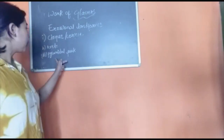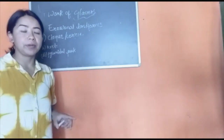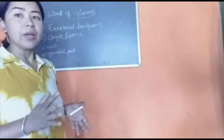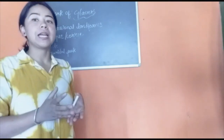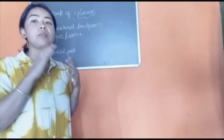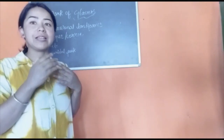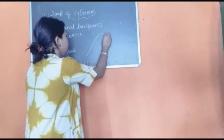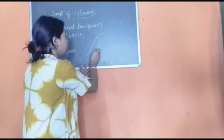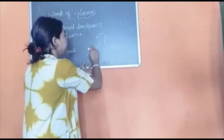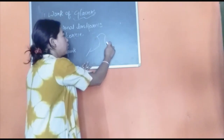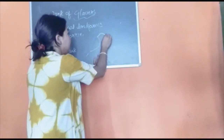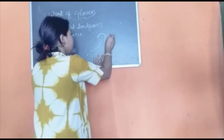After this we have the pyramidal peak. When cirques develop on all sides of the mountain, because of erosion from all sides only a top portion is left out — that top portion is known as the pyramidal peak. We have one cirque here, one cirque here, and several other cirques on all sides of this mountain, so the portion which is left out is known as the pyramidal peak.